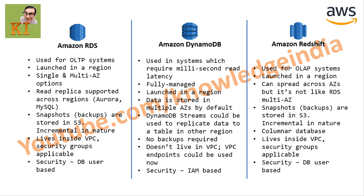For some engines in RDS - notably Aurora, MySQL, and others being extended - cross-region read replica is also available. This means your master database can run in North Virginia while a read replica runs in North California. If North Virginia goes down, you can promote the North California read replica to master and point your application to it. There will be some replication delay, but it's a very good option.